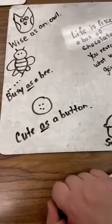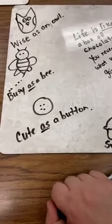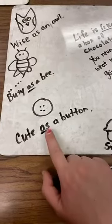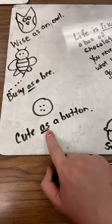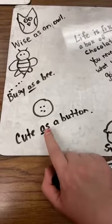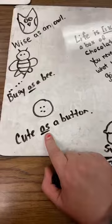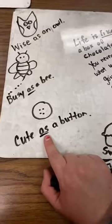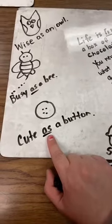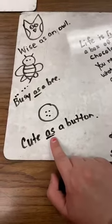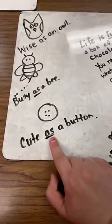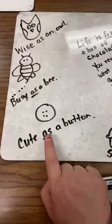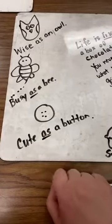The next one that I have is: cute as a button. It's using the word as, so it's comparing — because buttons, some people think they're cute. They come in all different shapes and all different sizes, and they can be put on lots of different things. So you're cute as a button.